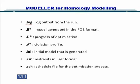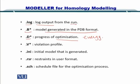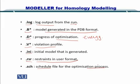Amongst the outputs, you have the .log file which logs the output from the run, the model generated in the PDB.B file, and the progress of optimization in the D file. Optimization is based on energy optimization and rotamer configuration. The violation profiles are provided in the V file. The initial model generated is in the INI file. The restraints which the user may impose on the predicted structure and the schedule for the optimization process are also given as output files.